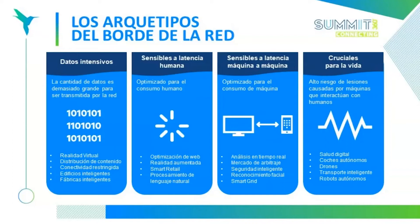Los casos cruciales para la vida son los de alto riesgo de lesiones causadas por máquinas que interactúan con nosotros: salud digital, autos autónomos, drones, transporte inteligente sin choferes y robots autónomos. Todo lo crítico para la vida debe procesarse en la cercanía; no debe haber competencia por ancho de banda entre billones de dispositivos, sino una respuesta muy rápida de un micro data center o edge data center con la información adecuada para el lugar donde estoy.